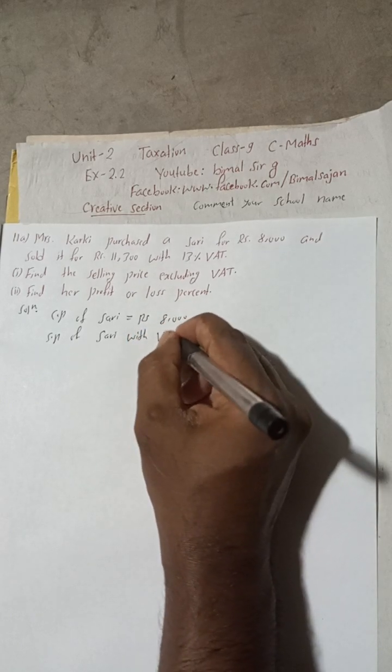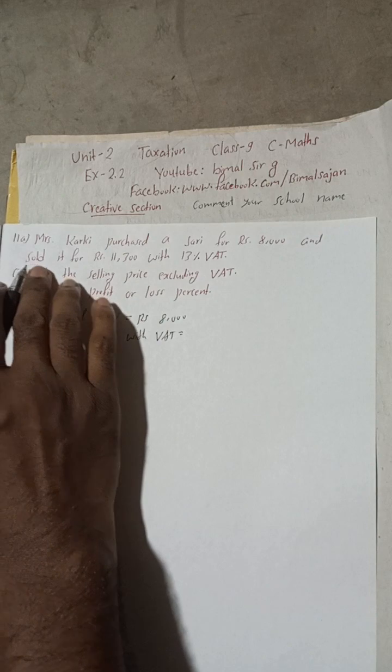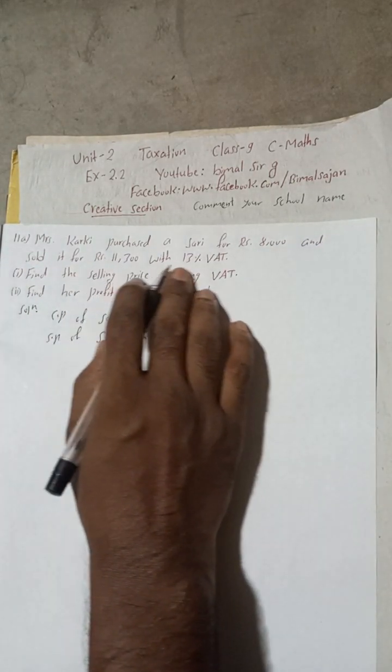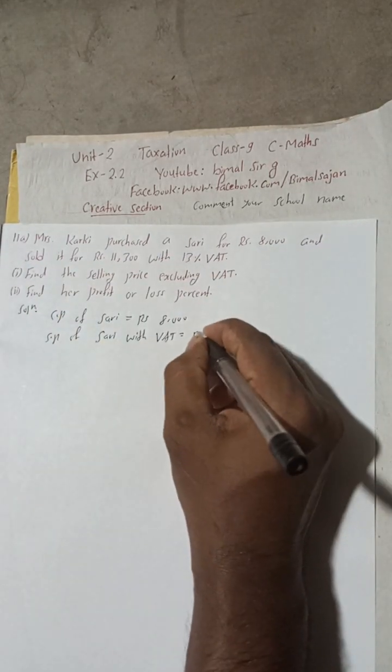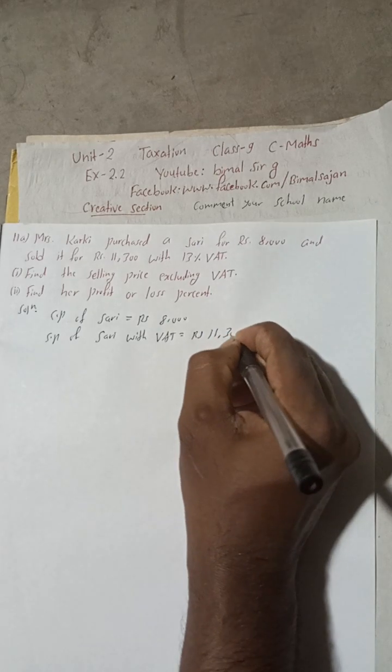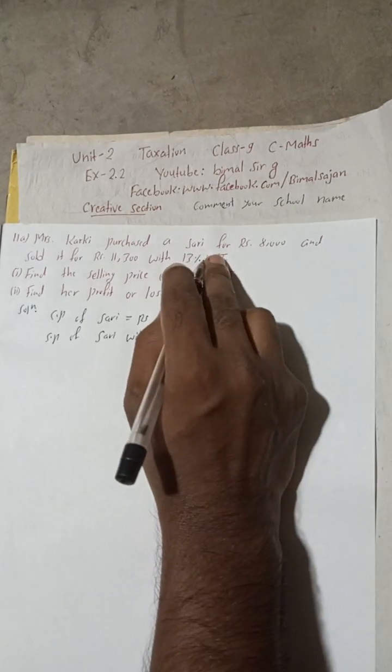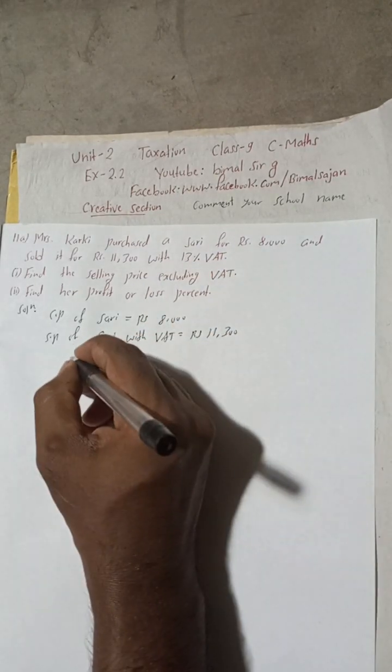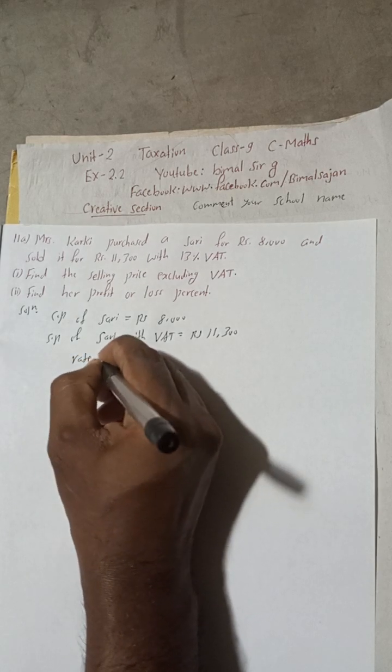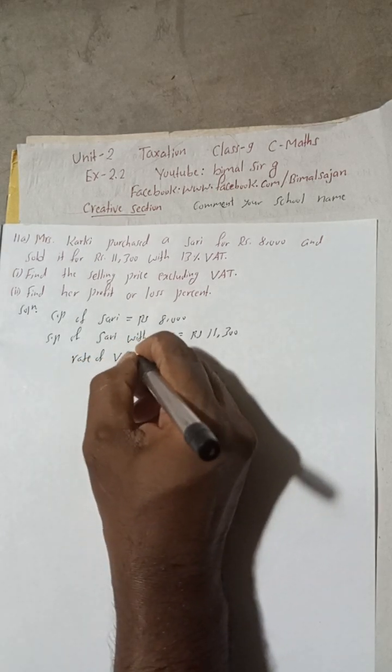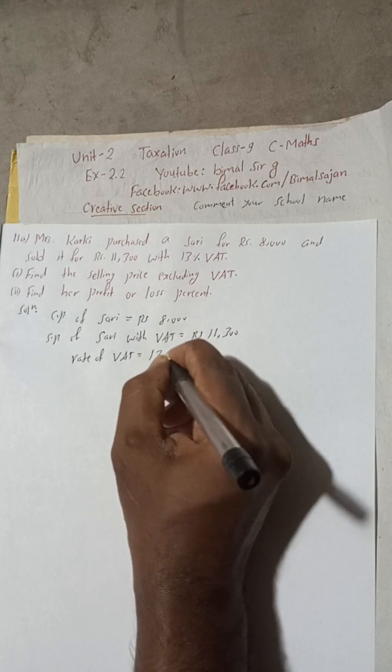With VAT, and sold it for this much with 13 percent. So this is with VAT, Rs. 11,300. And this is the rate of VAT. Rate of VAT is equal to 13 percent.